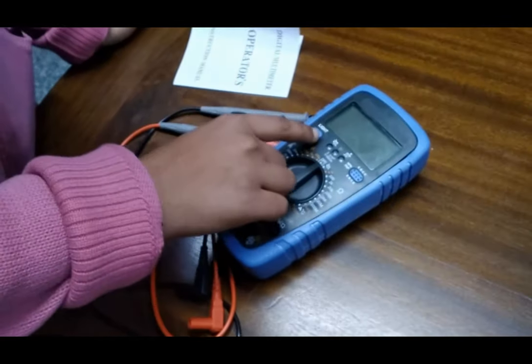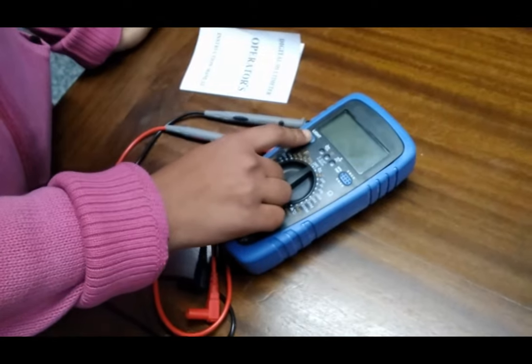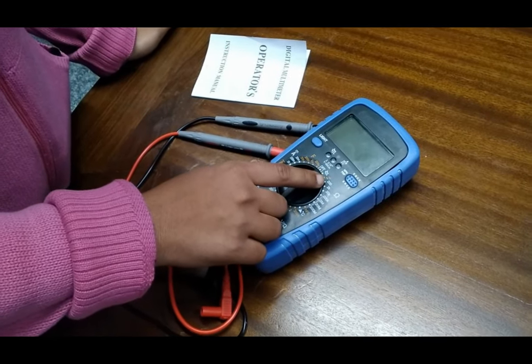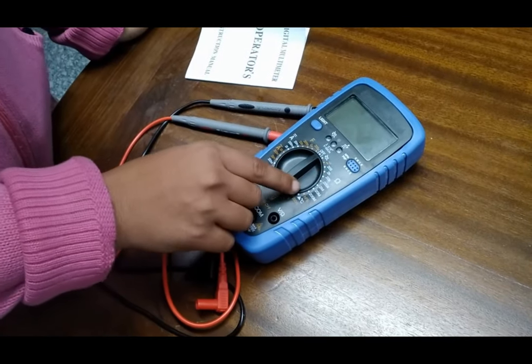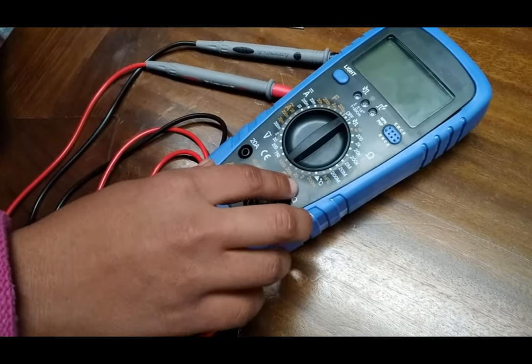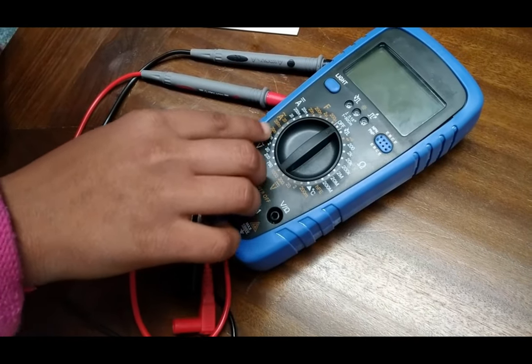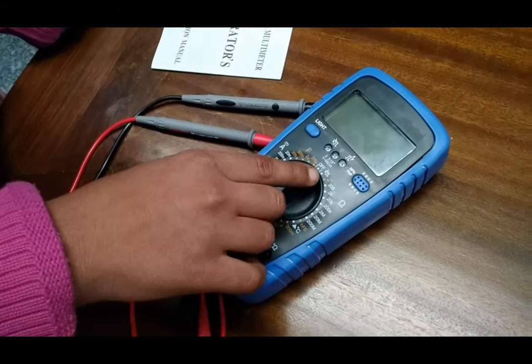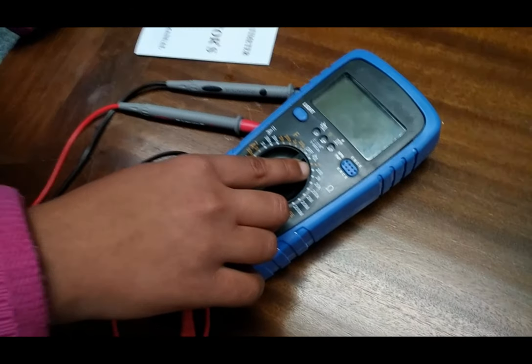So here we are with the digital multimeter. This is the light button, this is our knob. These are used for testing resistors, temperature of the environment, DC voltage, AC voltage, AC current, DC current, capacitors, and testing diodes.